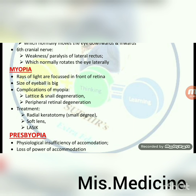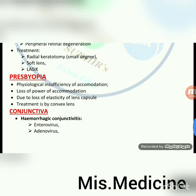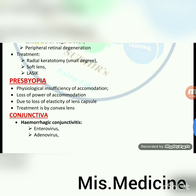Myopia: rays of light are focused in front of the retina; size of eyeball is big. Complications of myopia: lattice and snail degeneration, peripheral retinal degeneration. Treatment: radial keratotomy for small degree, soft lens, and LASIK. Presbyopia: physiological insufficiency of accommodation; loss of power of accommodation due to loss of elasticity of lens capsule. Treatment is by convex lens.